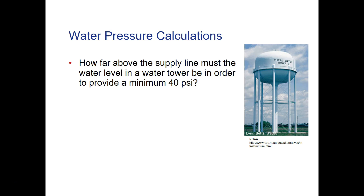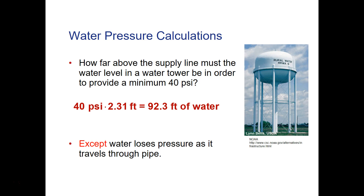So how far above the house must the water level be in a water tower to achieve the minimum 40 PSI pressure at a building? If you do that calculation: 40 PSI times 2.31 feet per PSI, we would need a distance of 92.3 feet of elevation to reach 40 PSI. However, there are water pressure losses as water travels through a pipe, so even more height may be needed.